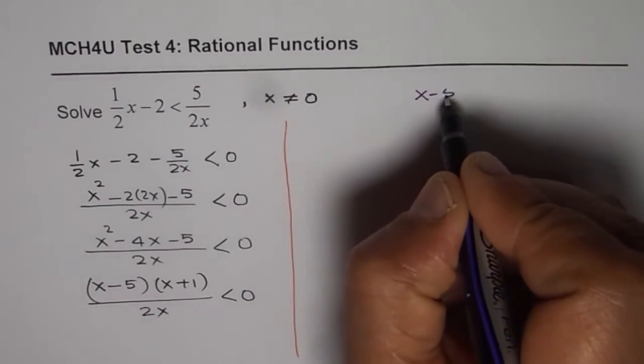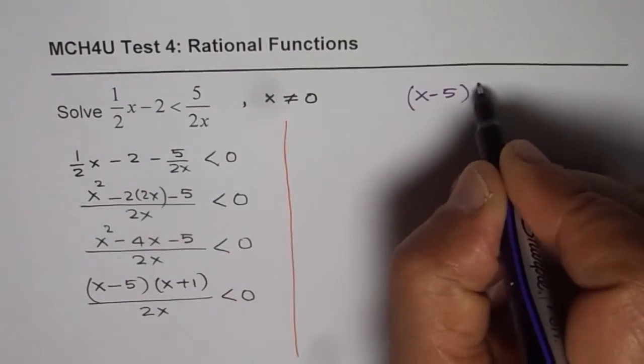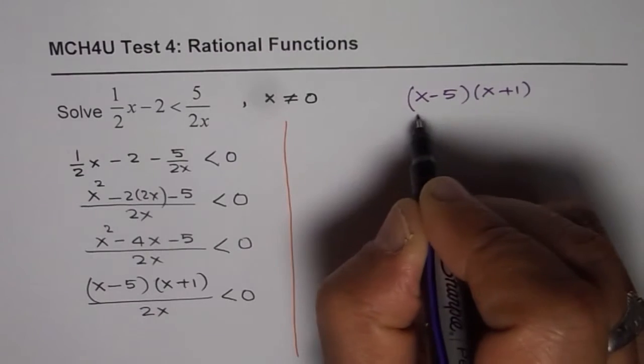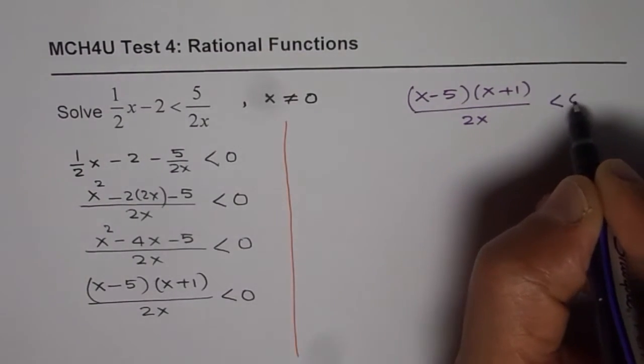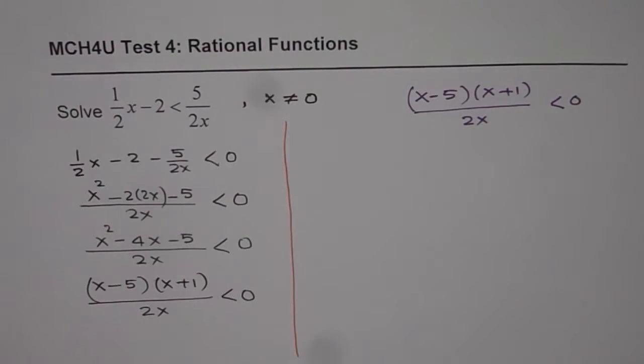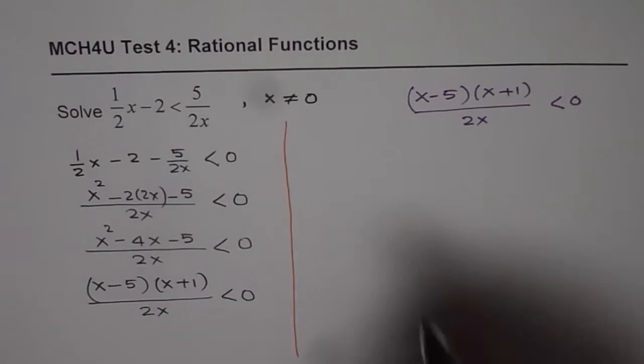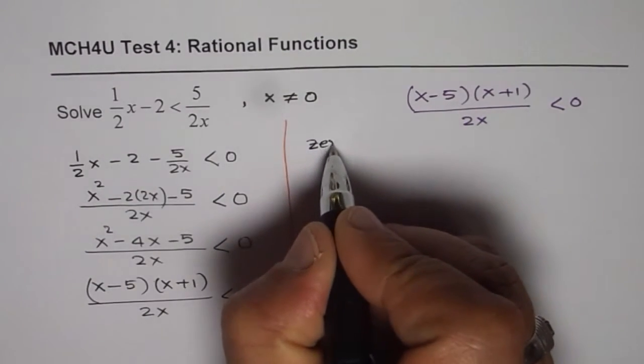So, we have (x minus 5)(x plus 1) divided by 2x less than 0. In this case, we have zeros which are at, let's write all our zeros.